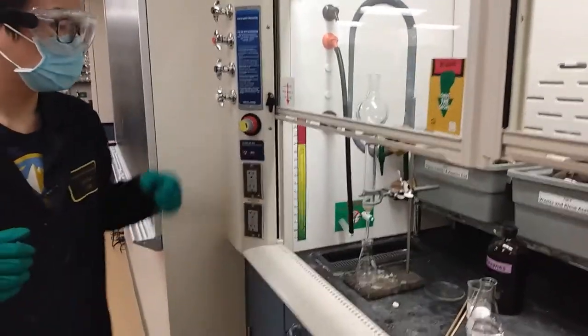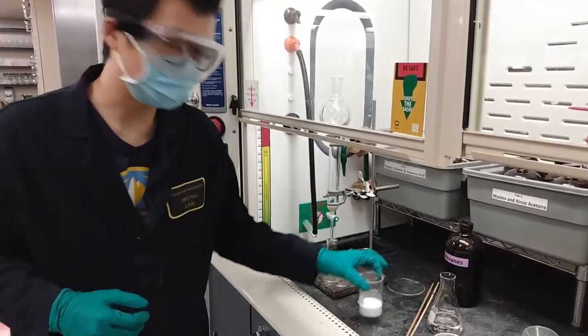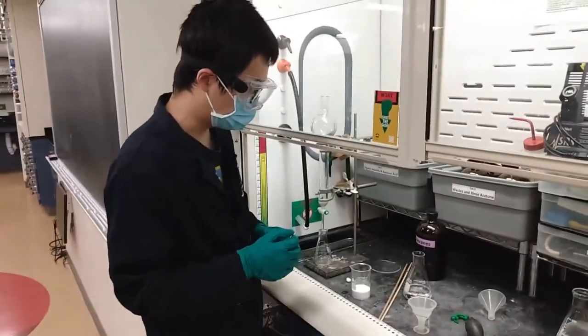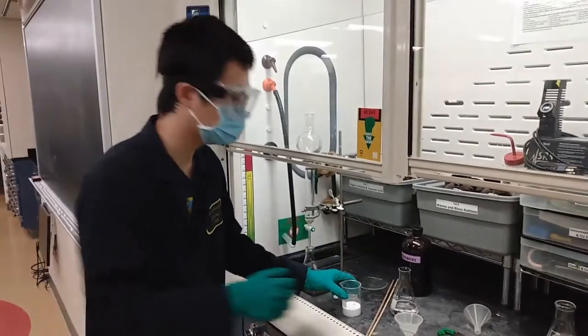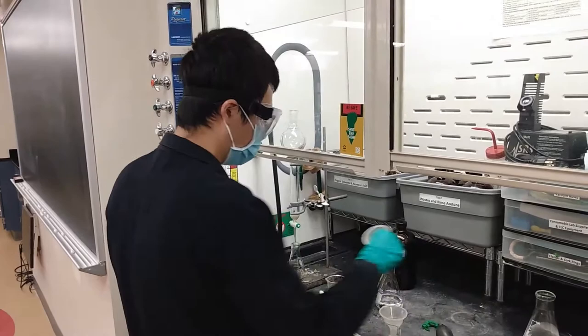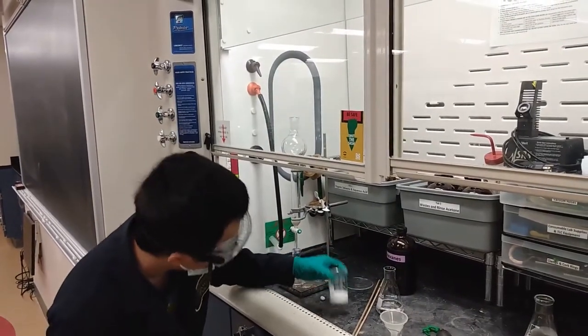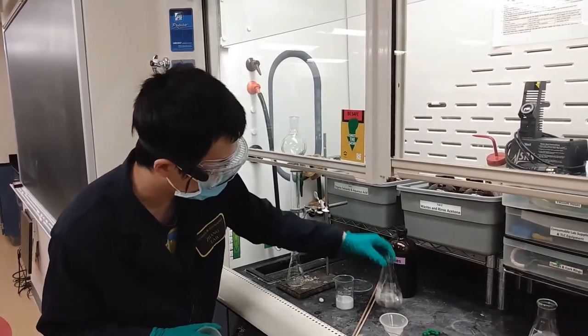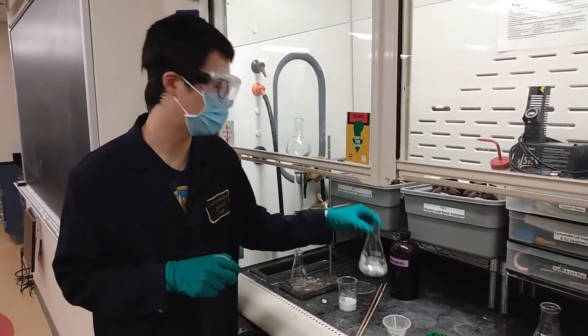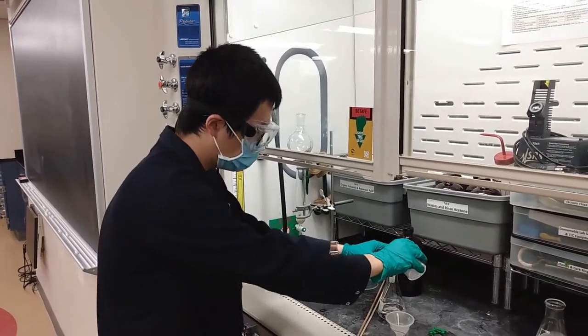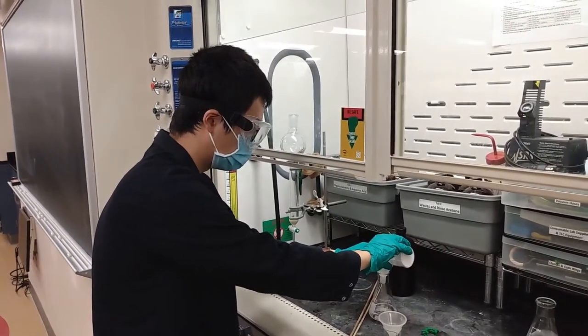The next step is to load the silica gel into the column. This is wet loading. We have around 50 ml of silica gel in this beaker and around 100 ml of hexane, so we add the silica gel to the hexane.